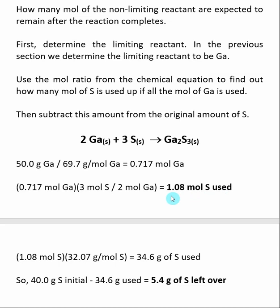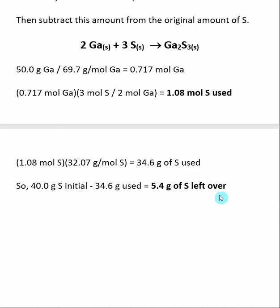I now want to find out how many grams of sulfur are being used. I take the moles and multiply by the molecular weight of sulfur. I know I'm using up 1.08 moles of sulfur during this reaction. I multiply by the molecular weight of sulfur, which I obtained from the periodic table. This tells me if I use up all of my limiting reactant (gallium), I will use up 34.6 grams of sulfur.